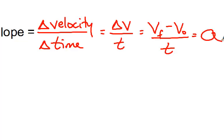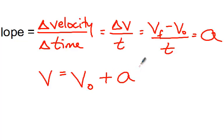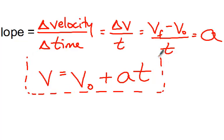If we rearrange that equation, we get that the velocity at any point in the future is equal to the initial velocity plus the object's acceleration times the time that it is accelerating. So here's another important equation: v — the speed at any point in the future, sometimes written as vf — equals initial velocity plus acceleration times time.